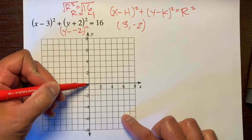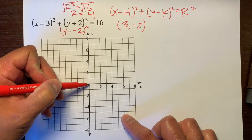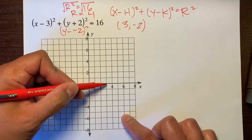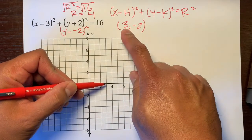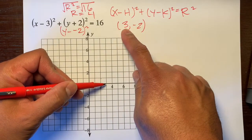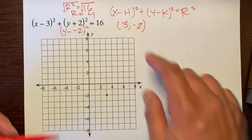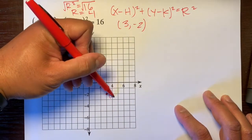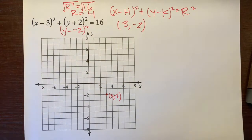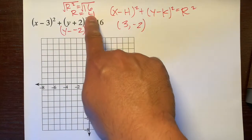So we'll start off at the origin, 0, 0. We will shift to the right, 3 units. 1, 2, 3. And we will shift down 2 units. So 1, 2. So this is our center. 3, negative 2. Let's actually label it 3, negative 2. And our radius is 4.